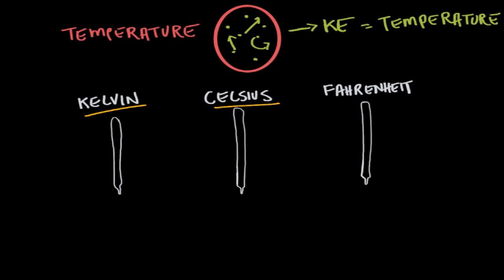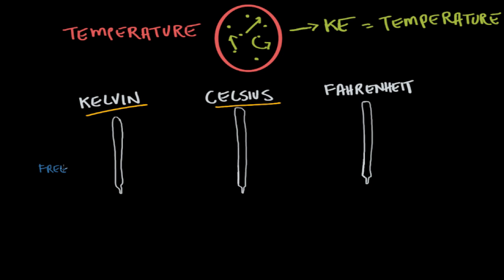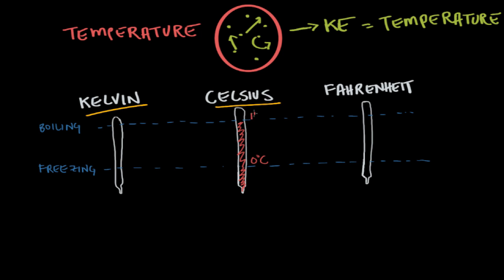As a point of comparison on these thermometers, the freezing point of water occurs at zero degrees Celsius, and the boiling point of water occurs at 100 degrees Celsius — that's where water turns into steam. On the Kelvin scale, water's freezing point is 273.15 Kelvin, and water boils at 373.15 Kelvin.